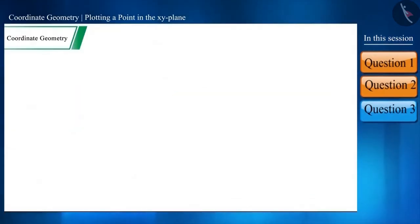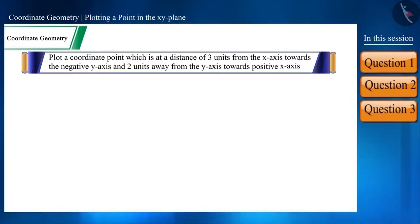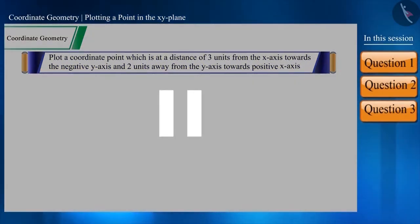Friends, let's take a word problem. Plot a coordinate point which is at a distance of three units from the x-axis towards the negative y-axis and two units away from the y-axis towards positive x. Friends, keeping in mind the information given here you have to solve it. Try to solve this question yourself by pausing the video.